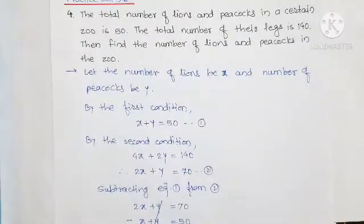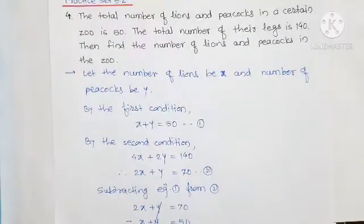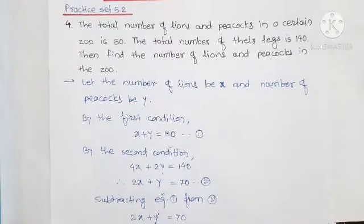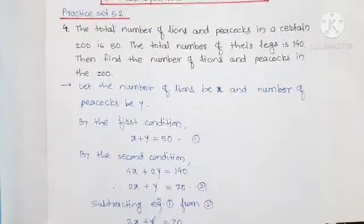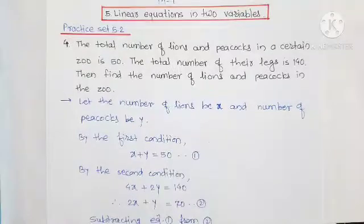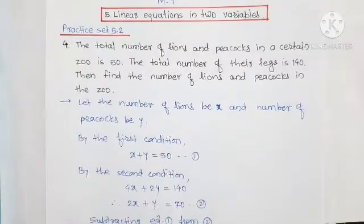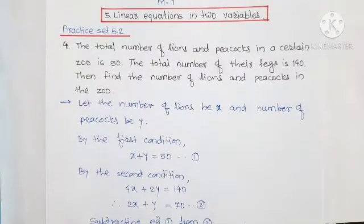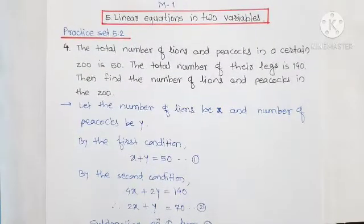Here we find the answer to the given problem. First we frame two equations by using the conditions in the given example. Before that, we take variables for the unknown quantities, then using the conditions we frame the equations, and then by solving these two equations we can easily find the solution.